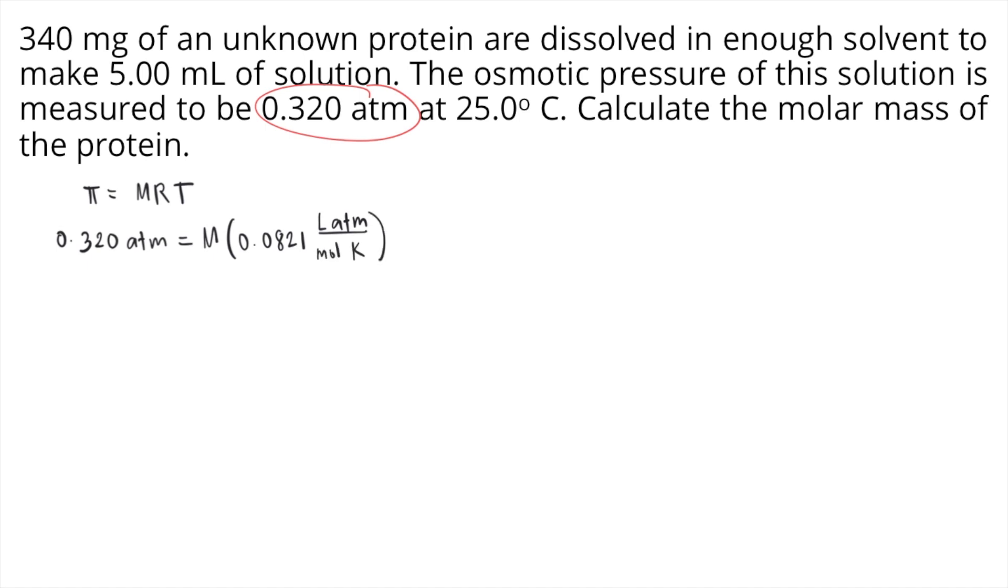T is the temperature in Kelvin. In the problem, the given temperature is 25 degrees Celsius, so we need to convert this first into Kelvin. How do we convert Celsius to Kelvin? We simply add 273.15. So 25 plus 273.15 equals 298.15 Kelvin. That is our temperature in Kelvin.